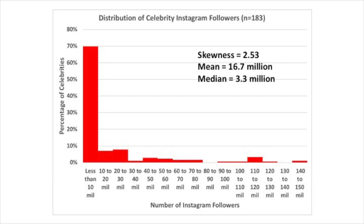The median value is actually included in that very first bar. The median is the 50th percentile, and that first bar accounts for 70% of the celebrities in our sample.